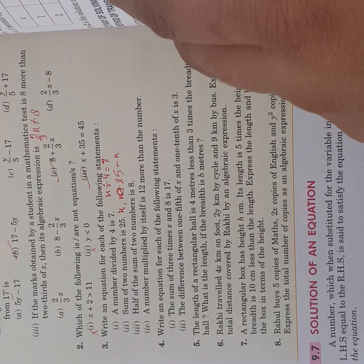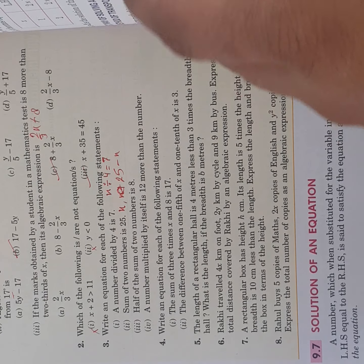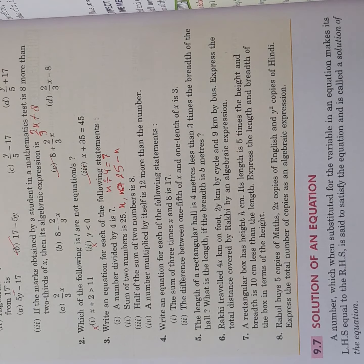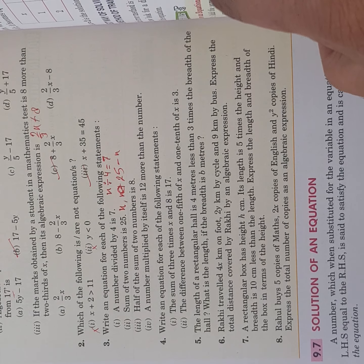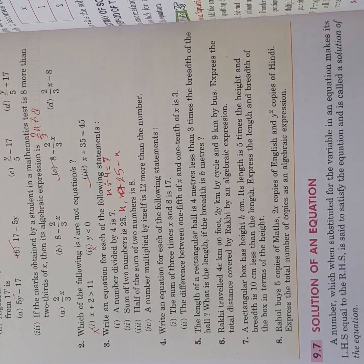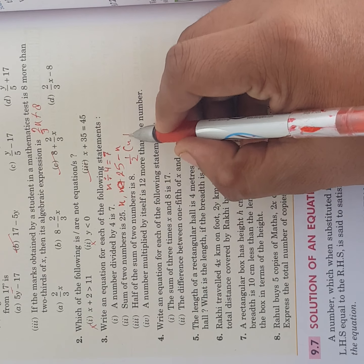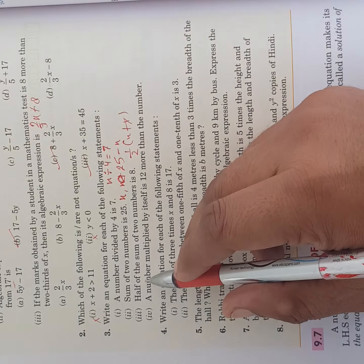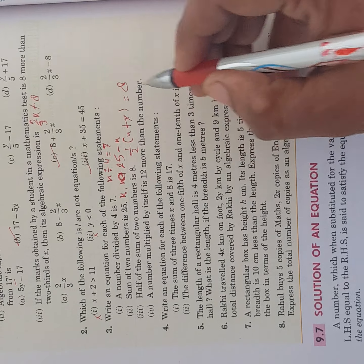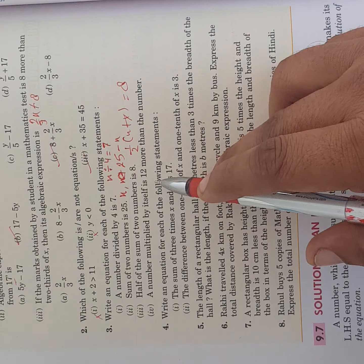You can say the numbers are x and y. So half bracket x plus y. Half of sum of the numbers is 8, is equals to 8.